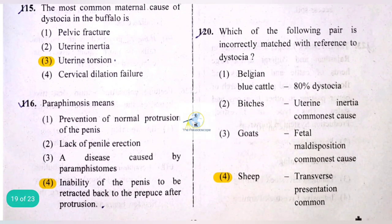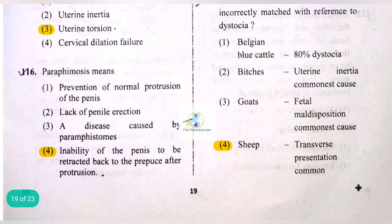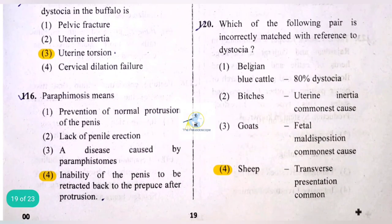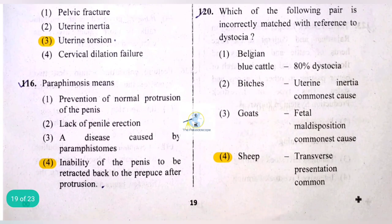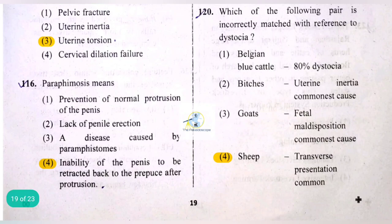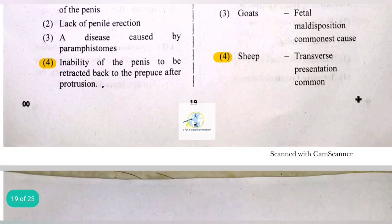Regarding dystocia in sheep, transverse presentation being common is an incorrectly matched pair. Belgian Blue cattle having 80% dystocia is correct. Uterine inertia as the commonest cause is correct. Fetal maldisposition as the commonest cause in goats is correct. The external quality of an egg is judged from its shell thickness.